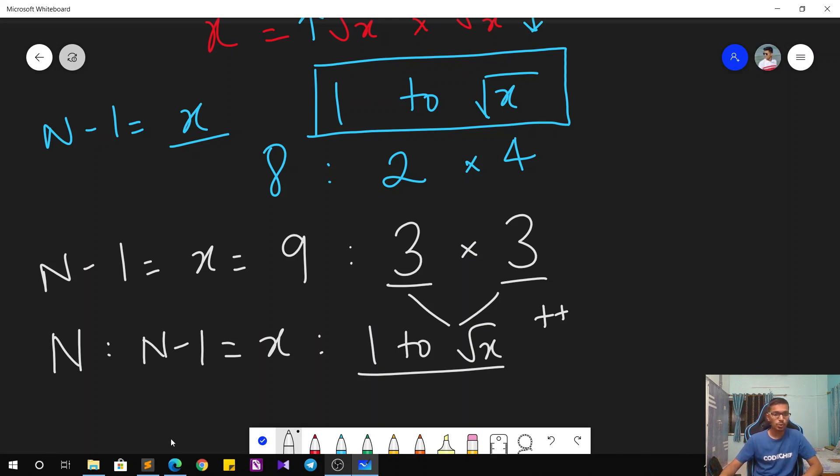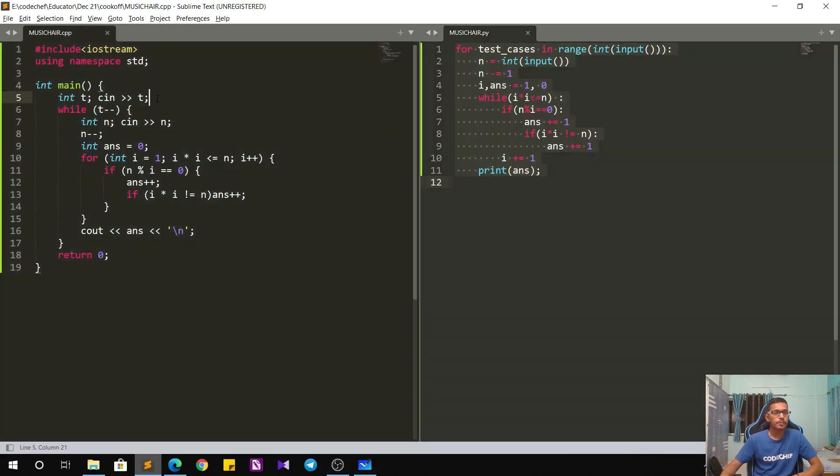So this is going to be the solution. Now let's see the implementation in C++. We have the test cases—int T, while T minus minus—standard stuff. For each test case we take the input of N, decrement N by 1, so this is now N minus 1 basically, and now I have an answer variable.